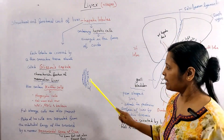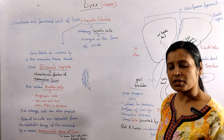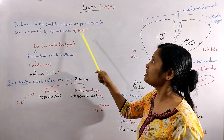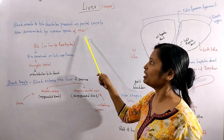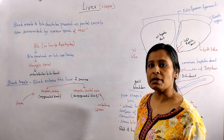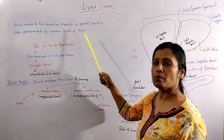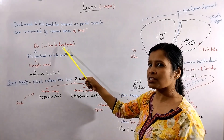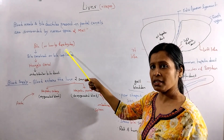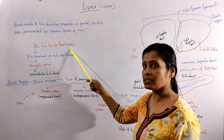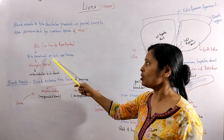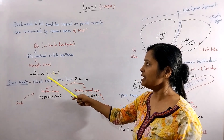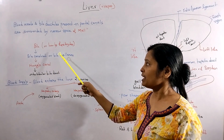Now, the bile produced by the liver travels from the hepatic cells into bile canaliculi, then into Hering's canals, and then into the interlobular bile ducts. This is how bile flows out of the liver.